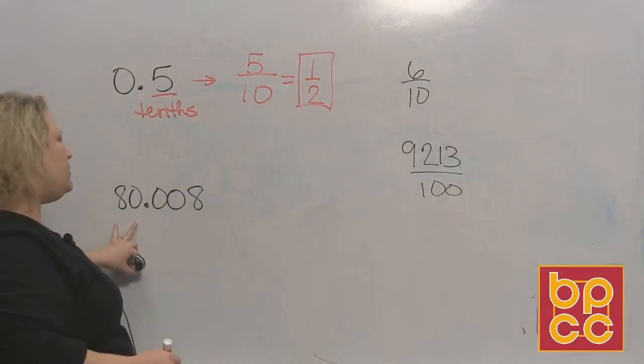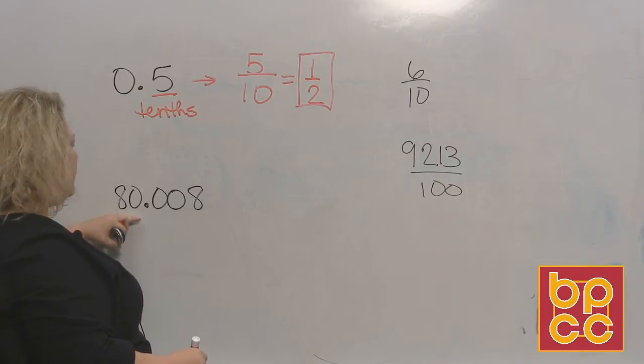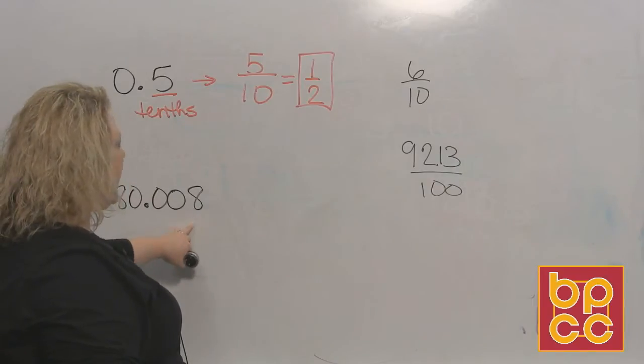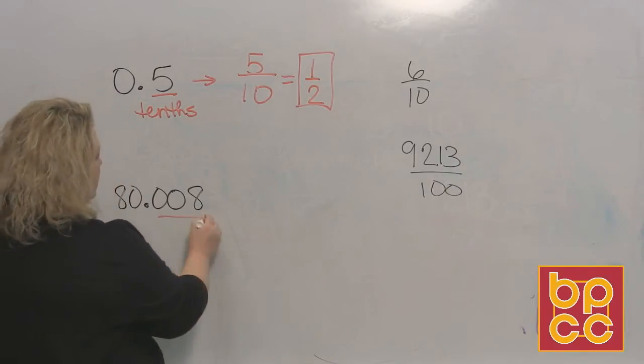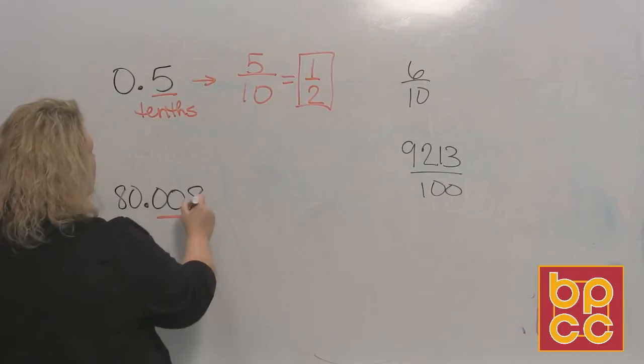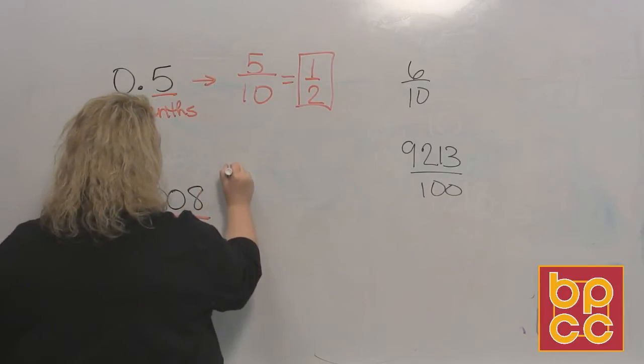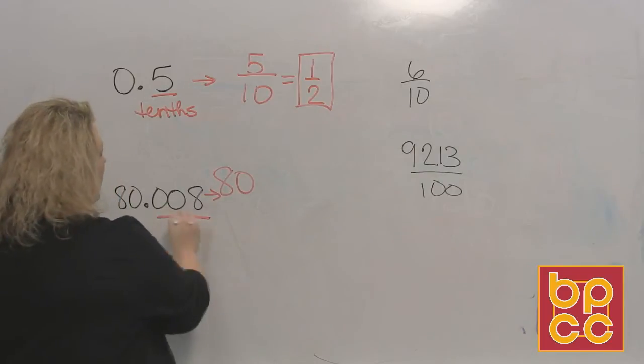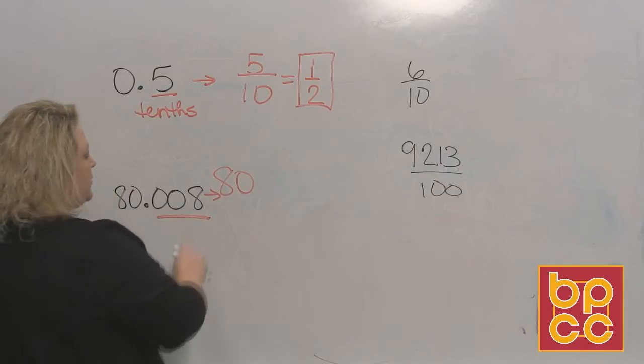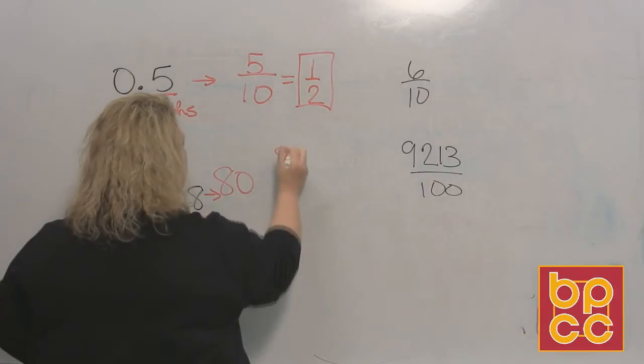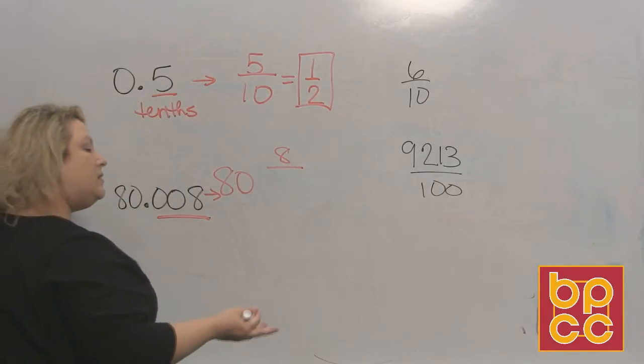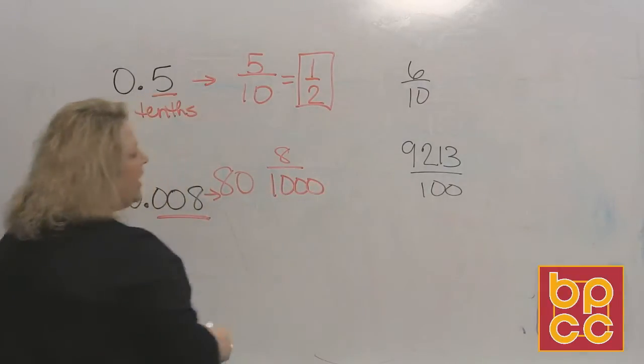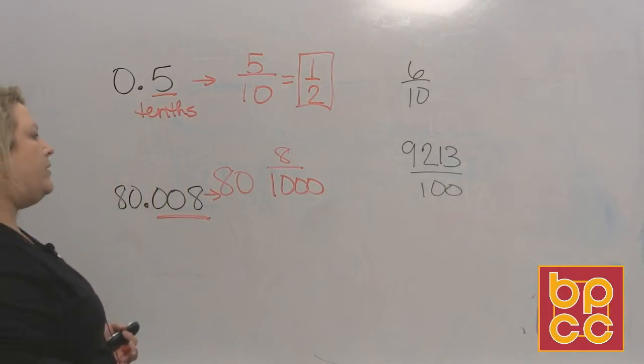Then you have another one. This one's a little bit bigger and it's a little different because it's got a number in front. So this is 80 and 8 thousandths because this is three digits behind the decimal. We want to write 80 because it's a whole number. All I care about is the decimal part. I have the digit 8 and it is in the thousandths place, so we put it over a thousand. And then if you can reduce it, you would reduce it.